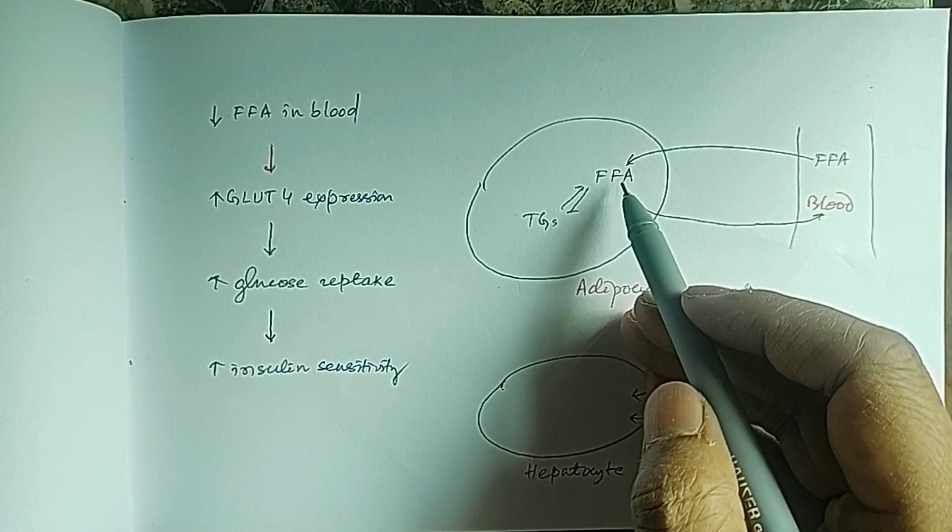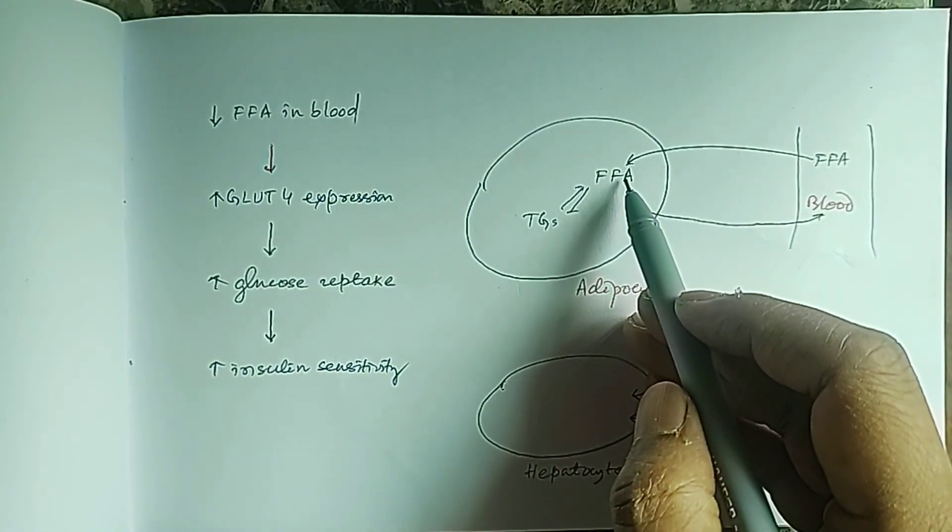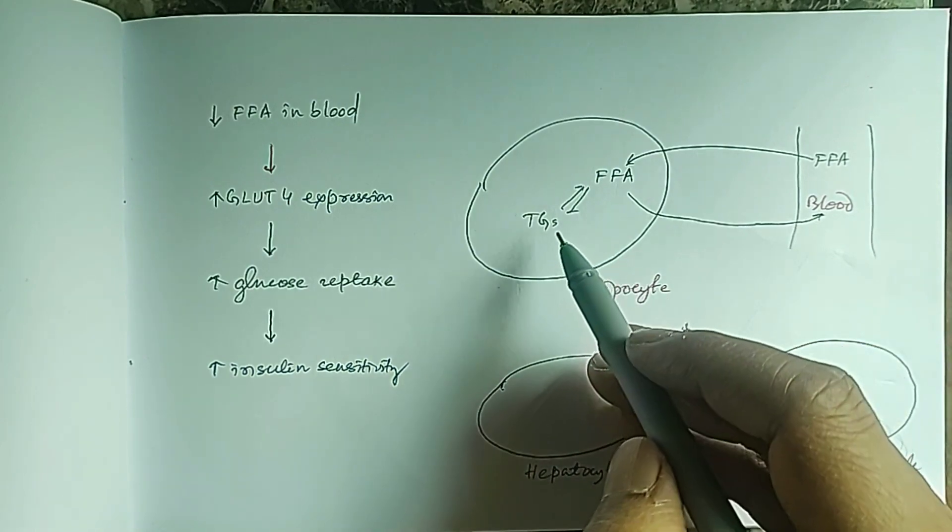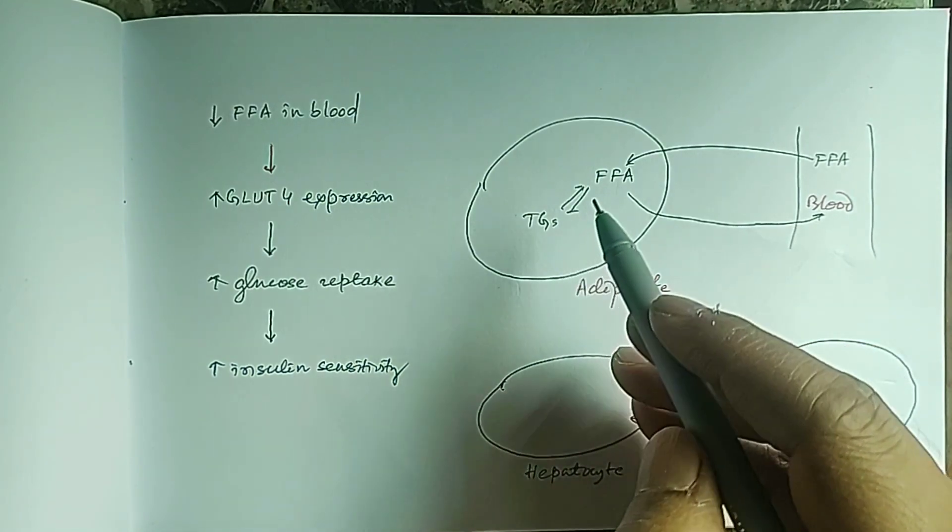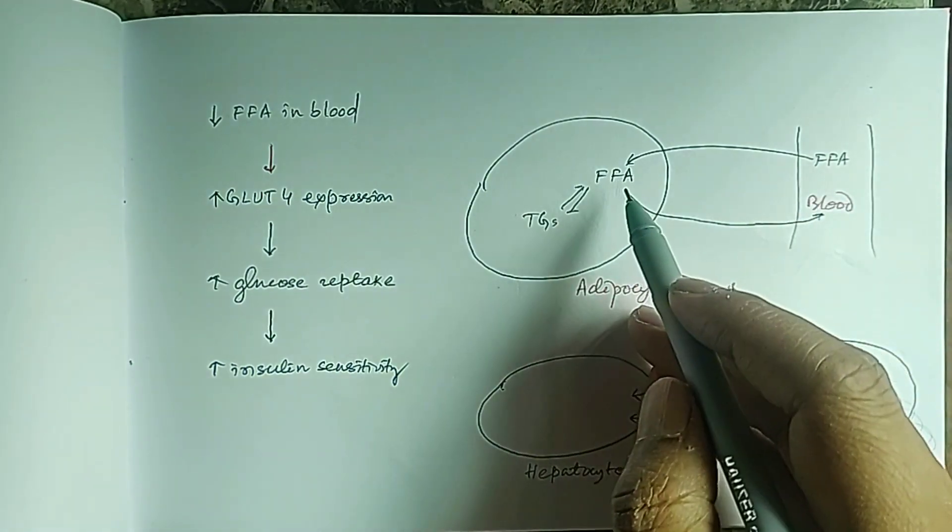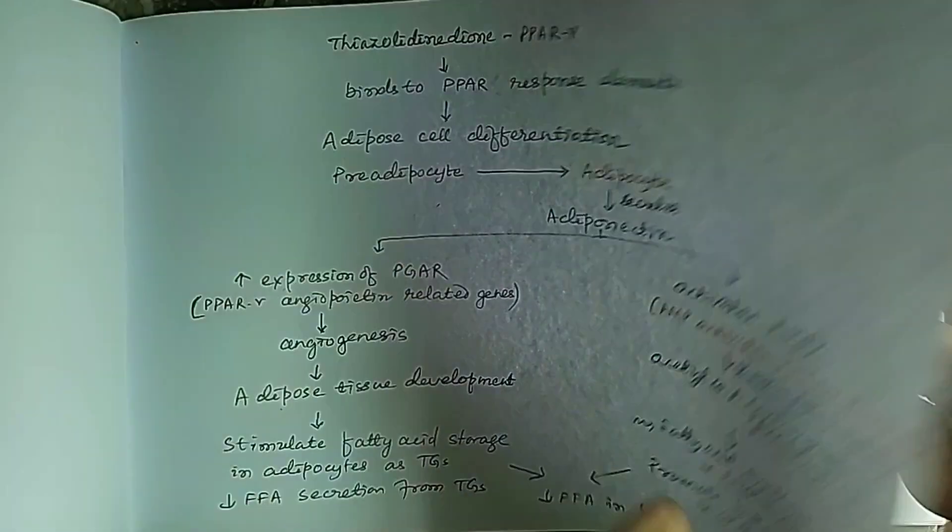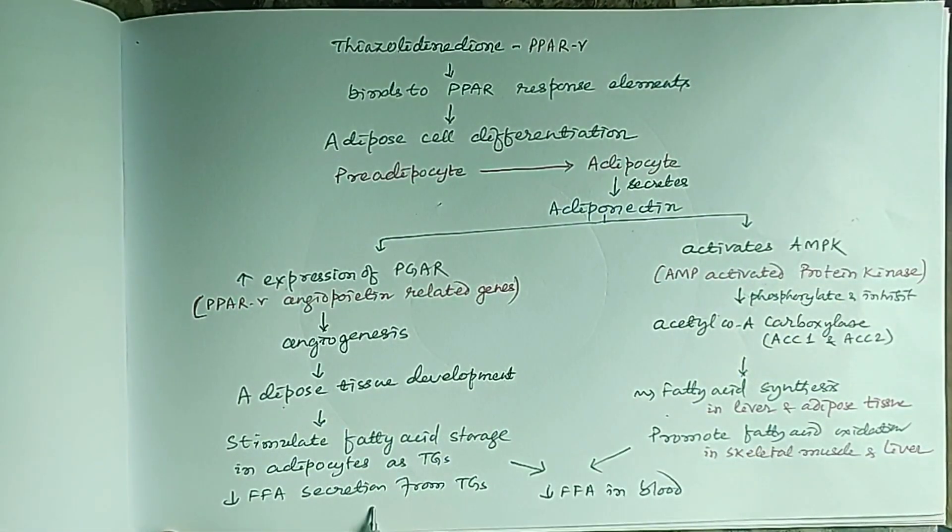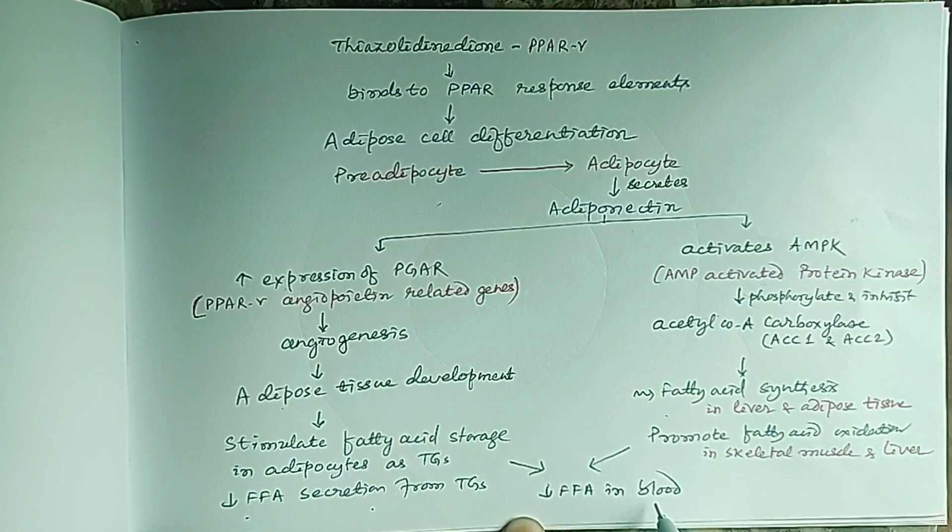There will be increased storage of triglycerides in adipocytes. Free fatty acids will be taken up and stored as triglycerides in the adipocytes. There will be decreased conversion of triglycerides to free fatty acids, stimulating fatty acid storage and decreasing free fatty acid secretion. All this will result in decreased free fatty acid in blood.